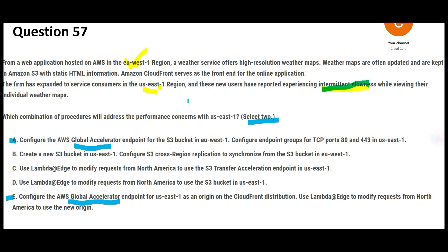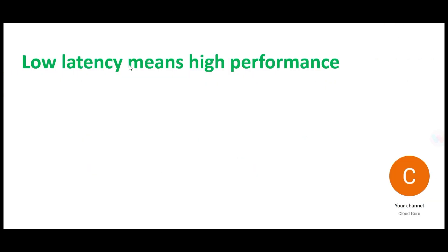Global Accelerator works best when you have three or four regional locations hosting the same copy of content, in order to provide a better experience to users — just like Netflix or any OTT platform like Amazon Prime. Global Accelerators would route to the regional service that can better address requests from a low latency perspective. Low latency and high performance — always remember this.